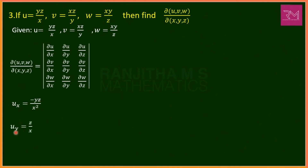For u = yz/x: treating y and z as constant, del u/del x = ux = −yz/x². Treating z and x as constant, del u/del y = uy = z/x. Treating x and y as constant, del u/del z = uz = y/x.